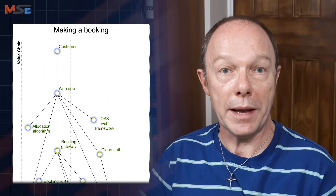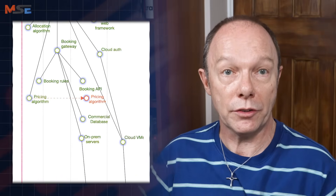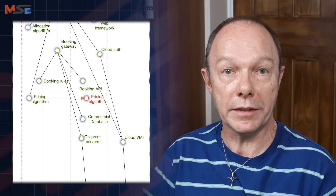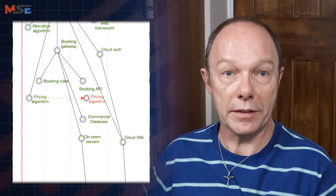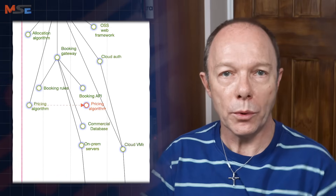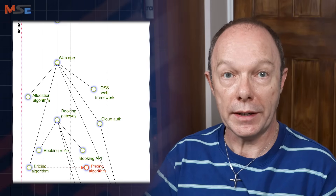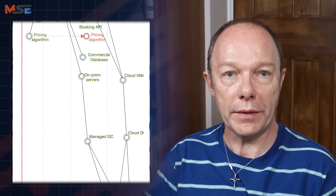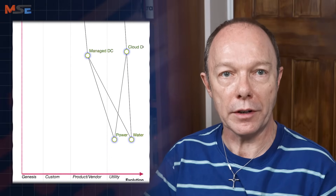The real power of a Wardley map is in scenario modeling. For each component, what would happen if you moved it right or left? What if you replaced that utility compute with your own tin? How much is it costing us to maintain that brittle pricing algorithm that we wrote long before that open source library even existed? How much control would we be giving up if we migrated to that? This would represent a shift from Genesis or custom to a product component. Wardley maps are a fantastic tool for this kind of analysis.